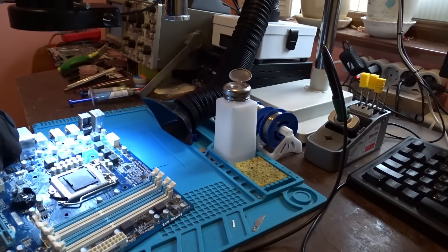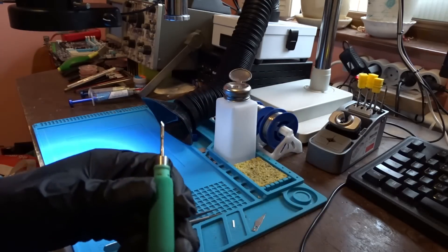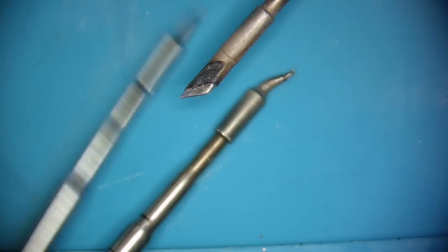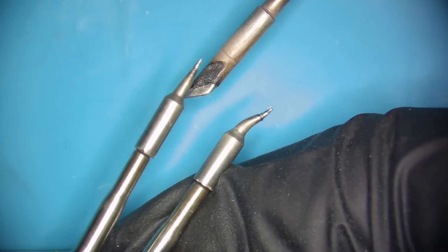First of all, hot air station with temperature and airflow control. Next, we have a micro-soldering iron. There are various tip types - here I have chisel, conical, and bent conical tips. For the purposes of today's video we'll stick with the chisel tip.